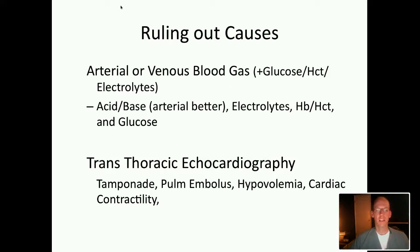The second tool is a transthoracic echo, which takes several more causes off the differential. It can rule in tamponade, identify a clot suggesting pulmonary embolus, show hypovolemia with a hyperdynamic under-filled heart, or reveal complete lack of contractility suggesting a severe MI or very poor prognosis. If you don't have this skill set, find someone who does — call for that resource early, and get additional training in emergent basic transthoracic echo.